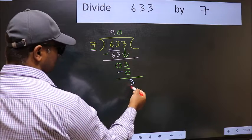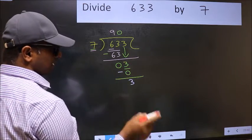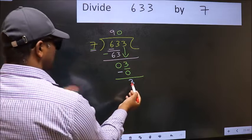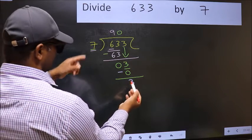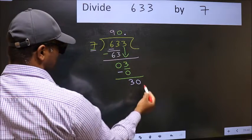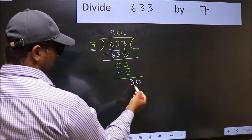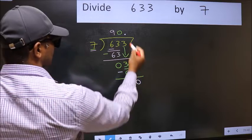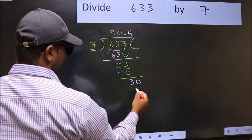Over here, we did not bring any number down. We did not bring any number down, and 3 is smaller than 7. So now you can put dot and take 0. So 30.